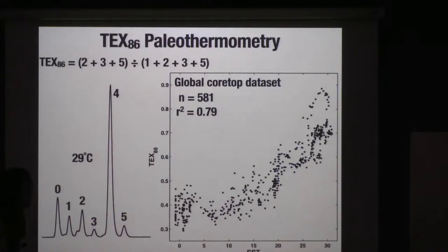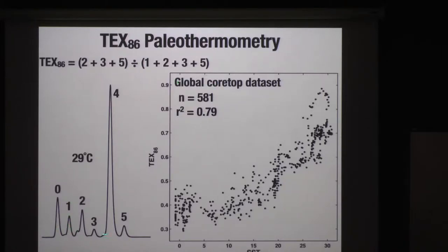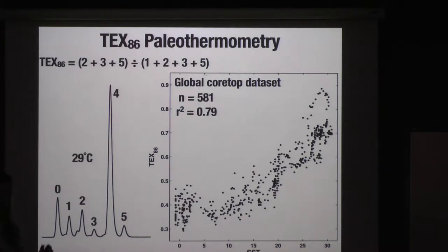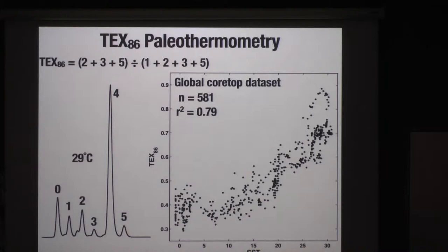So how do we calibrate this cyclization tendency to temperature? We make an index — that's what the TEX86 index is. These are what the compounds look like when you analyze them on the HPLC. It's simply the ratio of the sum of the ring-bearing compounds to the sum of all — a way to quantify cyclization that by definition goes from zero to one. Looking globally, we can collect sediment core tops from everywhere around the world and plot TEX86 versus the overlying sea surface temperature. We find that SST accounts for about 80 percent of the variance in the dataset — a lot — and it's clearly the primary driver of cyclization in the lipids.